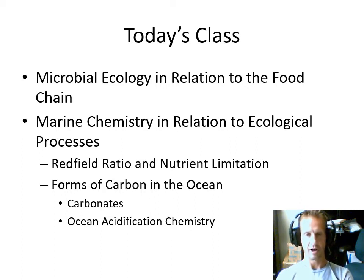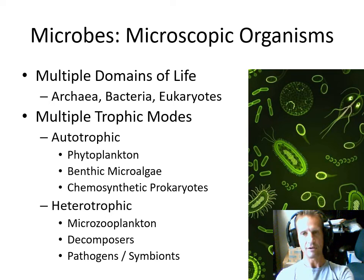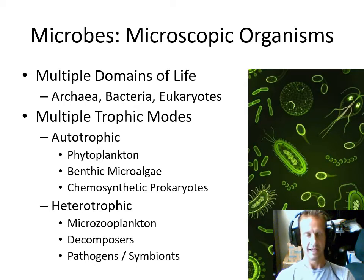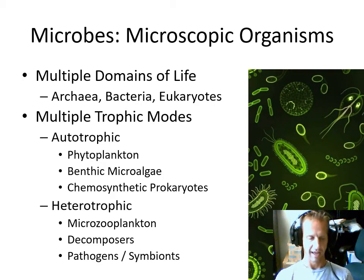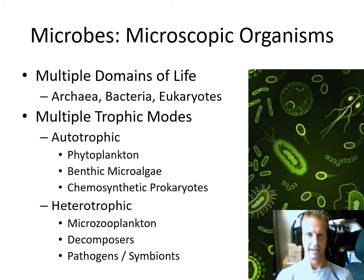We'll talk about carbon in the ocean, its different forms, and how that affects ocean chemistry. Microbes are microscopic organisms — it's just another word for microscopic organisms. They're defined by the fact that they're small and actually extremely diverse. All three domains of life — archaea, bacteria, and eukarya — are all included in the microbes, or all have some members that are microorganisms.